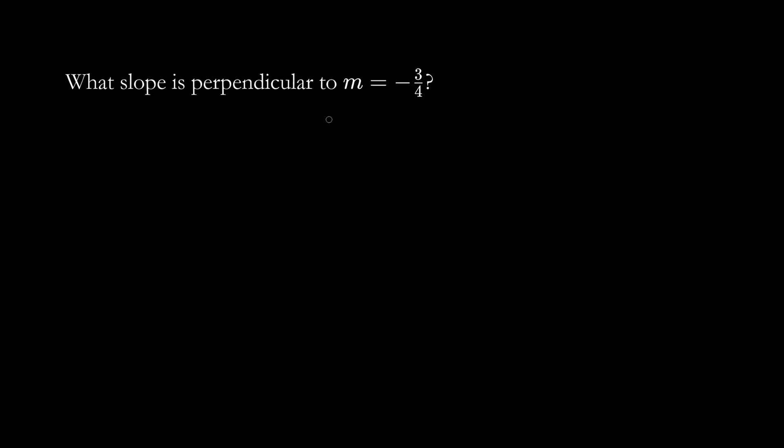What slope is perpendicular to m equals negative 3 over 4? m represents our first slope, which is negative 3 over 4.